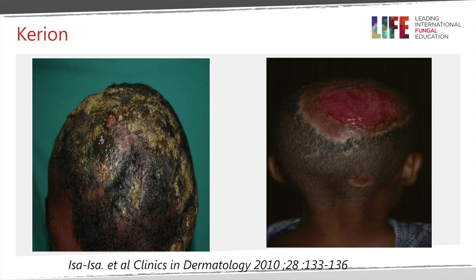Here we see the kerion — a very dramatic presentation of Tinea Capitis. The hair is matted together, and dried discharge produces a yellow crusting covering the entire scalp, making it difficult to identify where the lesion starts and ends. Areas of alopecia are visible over the parietal regions. Sometimes you need to clean or shave the head to fully appreciate the extent of the problem. When touched, it feels boggy, as if there is dissection of the tissue planes — like a boggy mass moving over the scalp.